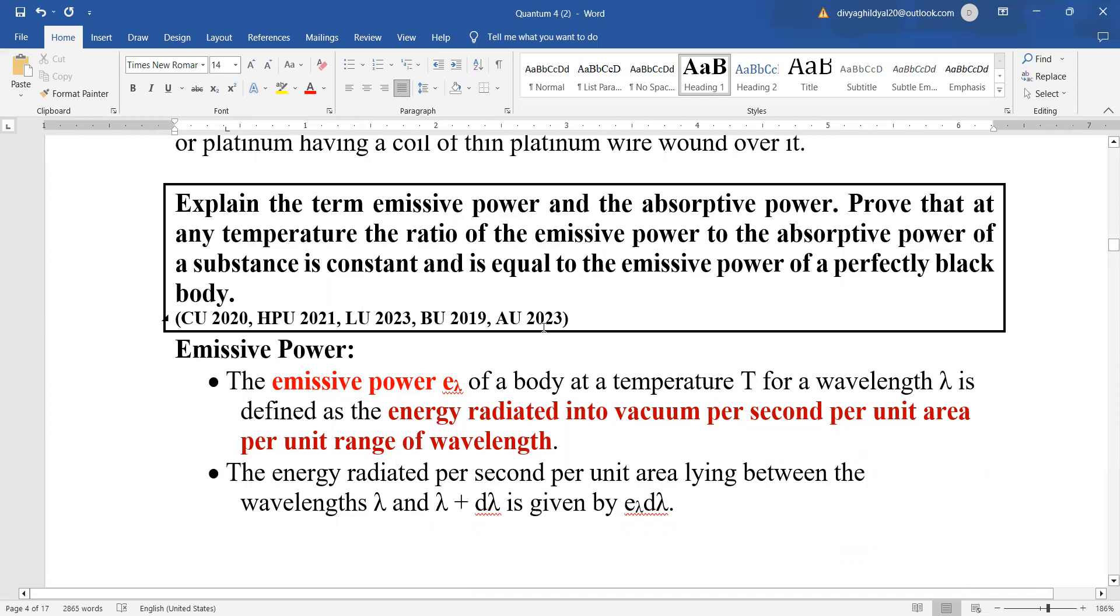First, you have to give the definition of emissive power and absorptive power, and then prove that their ratio is equal to the emissive power of a perfectly black body and is a constant.